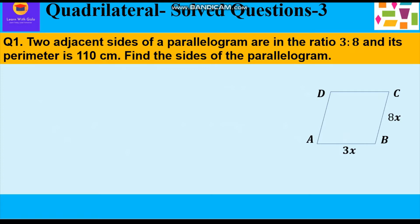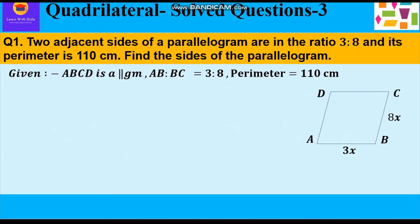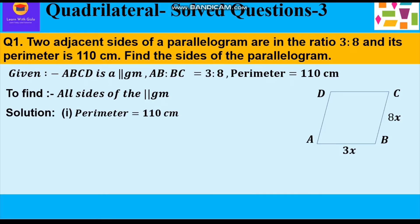Two adjacent sides of a parallelogram are in the ratio of 3 to 8 and its perimeter is 110 cm. Find the sides of the parallelogram. So in this question the adjacent sides are in the ratio of 3 to 8, perimeter is 110 cm, and we have to find all the sides of the parallelogram.